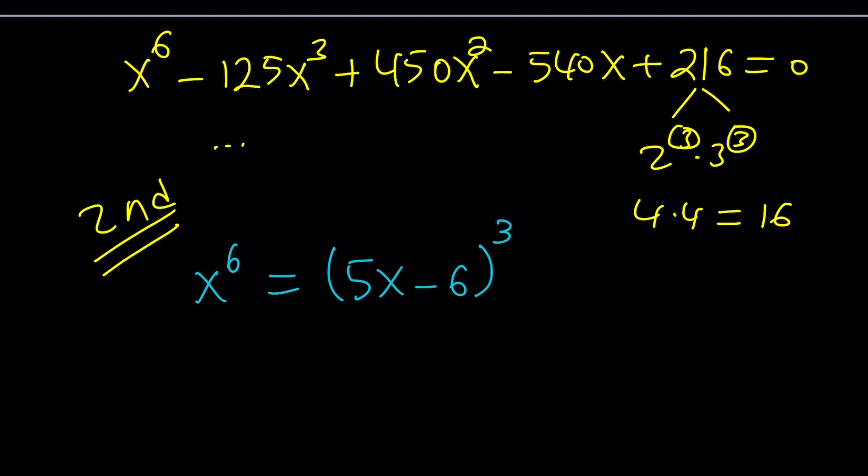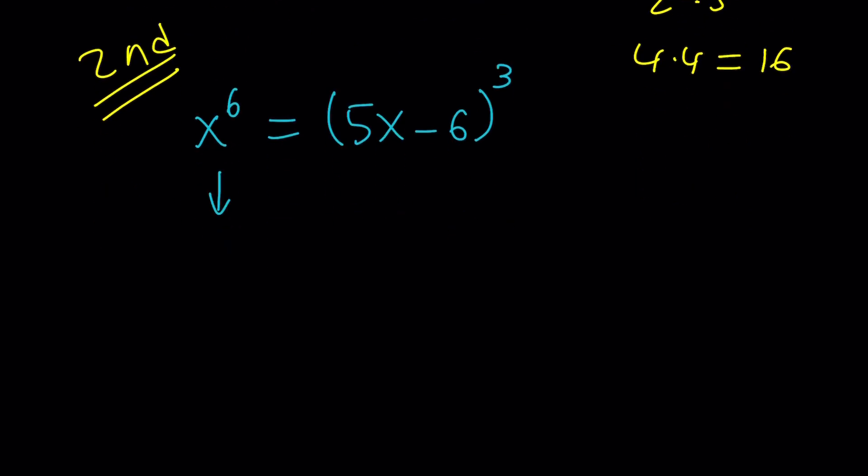So 3 and 6, does that ring a bell? Yes. They have a common factor, which means both of these can be written as perfect cubes. And that's just perfect. Let's do it. So this is basically x squared cubed, and this is 5x minus 6 cubed.